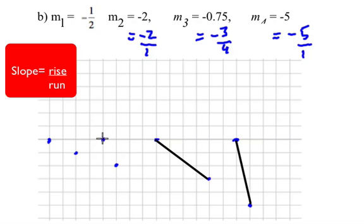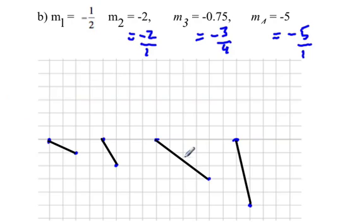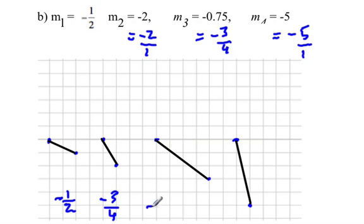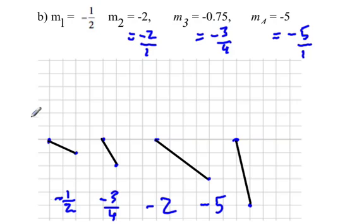We have negative three-quarters, negative two, and negative one-half. Ordering from least steep to steepest: negative one-half is the flattest line, then negative three-quarters, then negative two, and the steepest is negative five. You'll notice that on a number line we'd be going progressively further to the left as we go from negative one-half to negative five — the greater the negative number, the steeper the line.